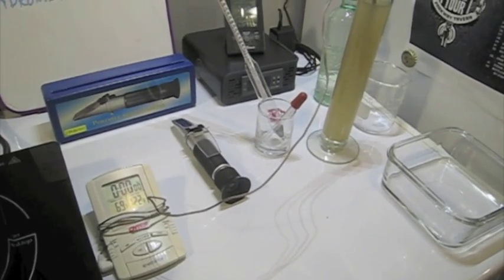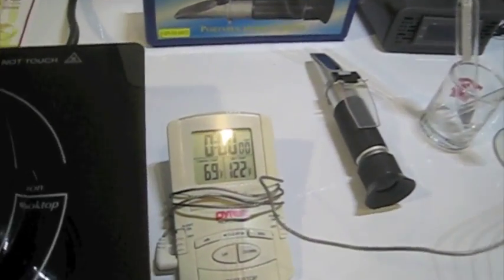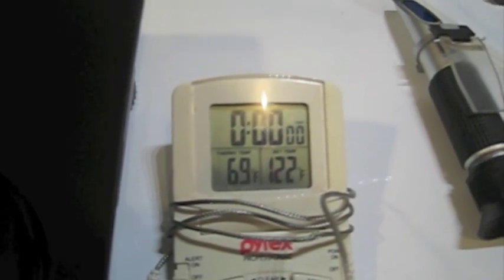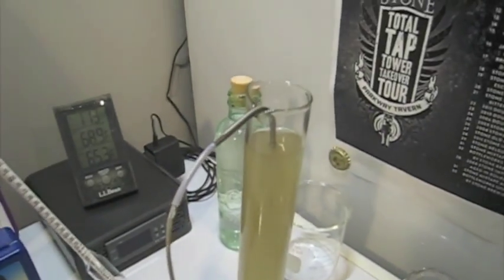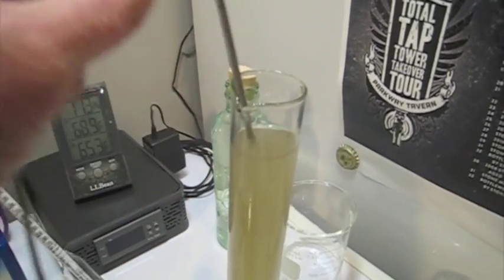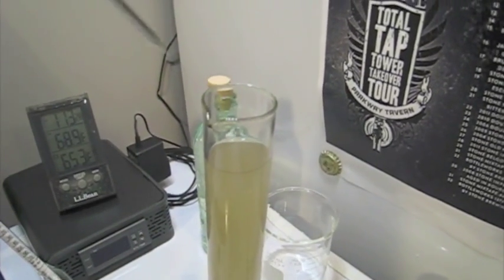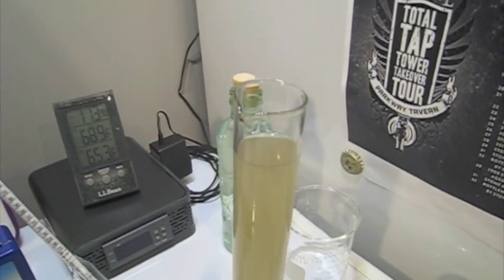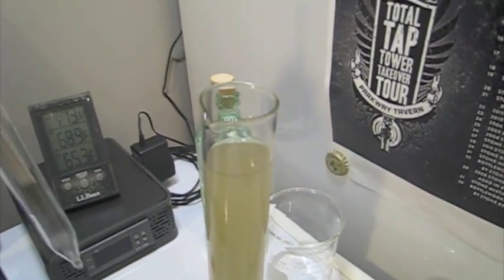Now we're ready for the final measurement. If we look down, we see our wort temperature right at 69 degrees. Come over here. I'm going to go ahead and take out the thermometer probe. Put in the hydrometer.